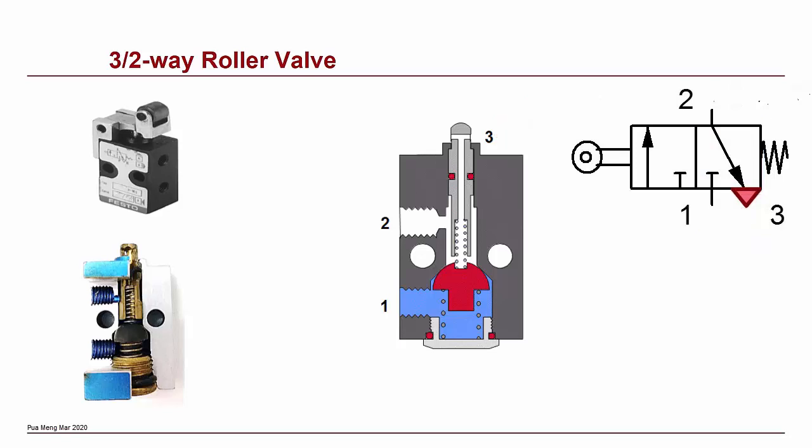Try to trace out the air path of the cross-sectional view and the symbol shown. They both correspond to each other.